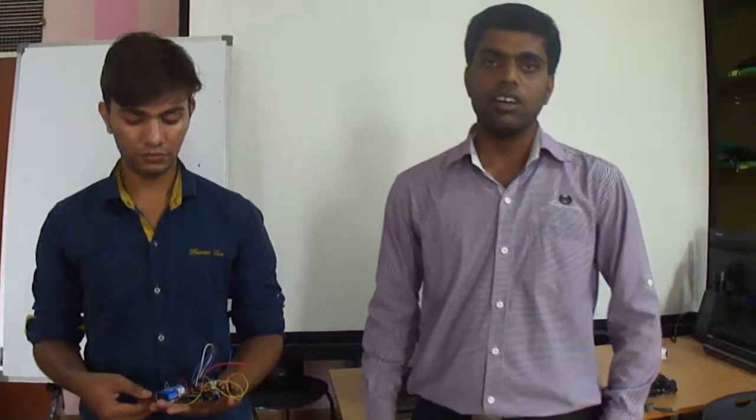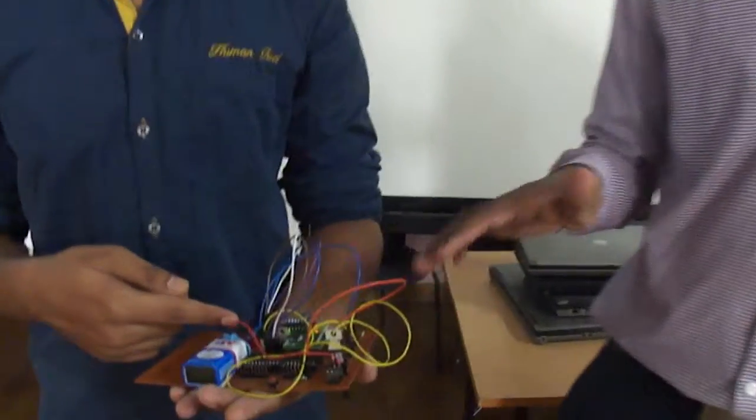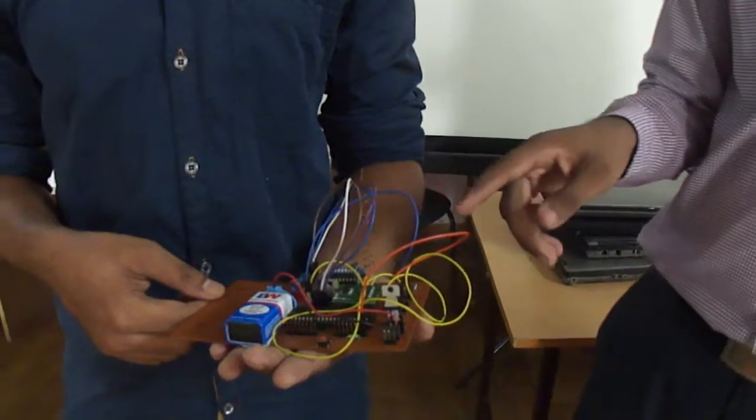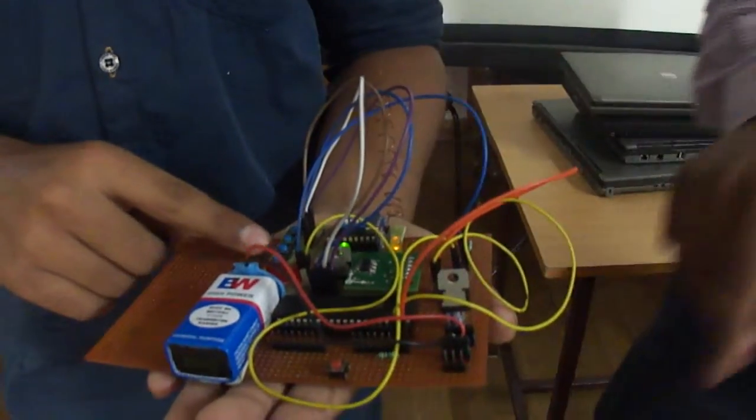In Gesture Control Robot, it senses the motion of gesture. For transmission, we have made it wireless communication. In wireless communication, we have used RF module. RF module is of two types - one is transmitter type and another is receiver type.